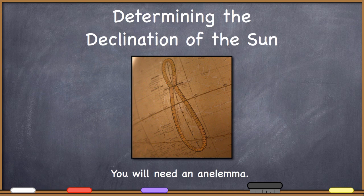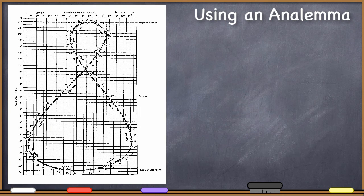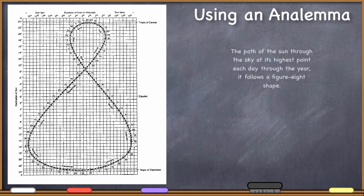An analemma is this figure-eight shaped device that you very frequently see on the sides of globes. It will help you determine the declination of the sun on any day. If you were to plot the path of the sun through the sky at any particular location at its highest point throughout the entire year, it would follow a figure-eight shape like this.